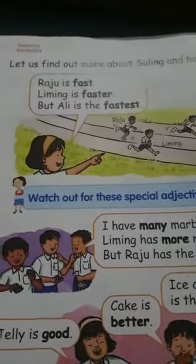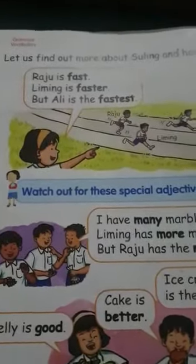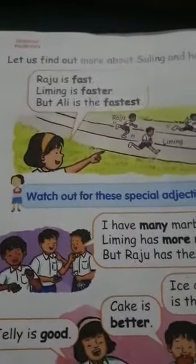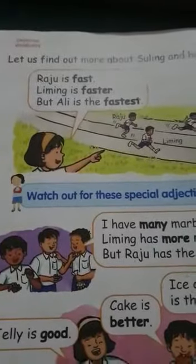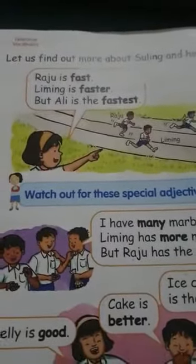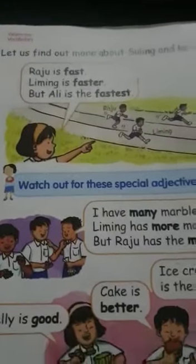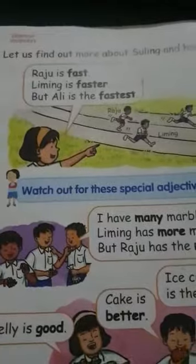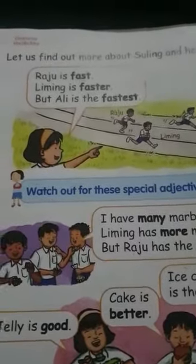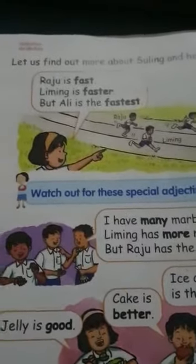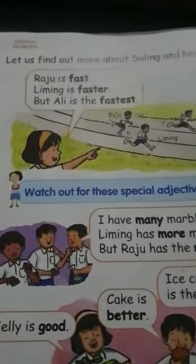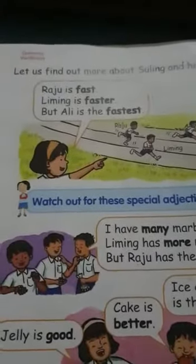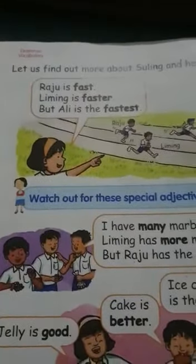Cliff is taller than teacher Shima. Now I want to compare teacher Shima, Cliff, and Abdurrahman — a whole group. One of them is the tallest, so Abdurrahman is the tallest. This is the adjective in comparative and superlative forms.